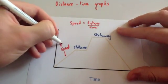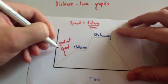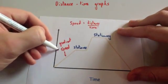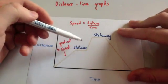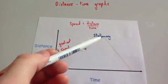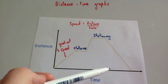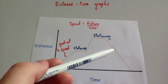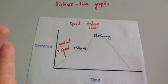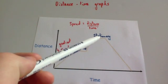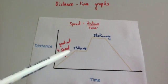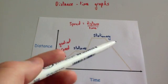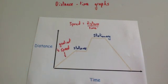The gradient gives the speed for each section. For the section returning back to the starting point, you need to be careful — if you calculate the gradient of that line you'll get a negative value. If you take just the magnitude of that, that would be the speed. What you're actually calculating is the velocity. The gradient is the velocity for the return section; if you just consider the size of it, that's the speed.